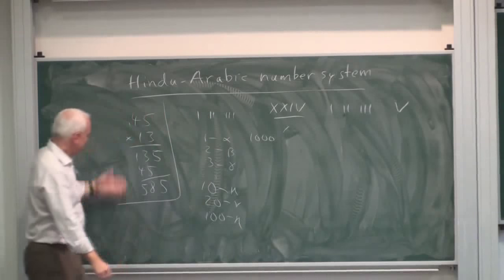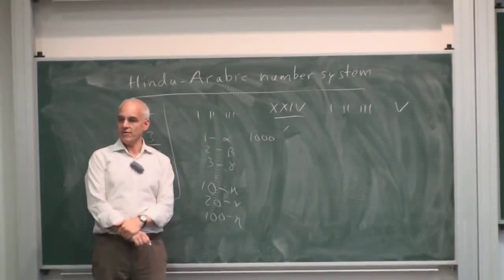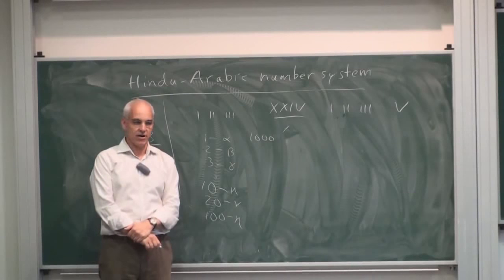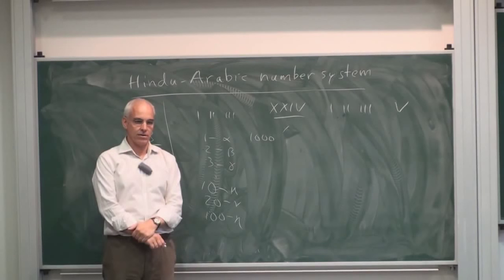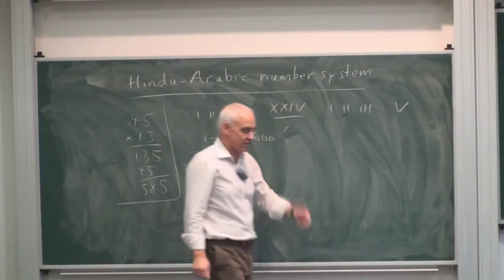If you want to teach a young person how to do multiplication with Roman numerals, you will find it very challenging. It's very hard to explain what goes on. You can't do it systematically because the numbering system is not very systematic.